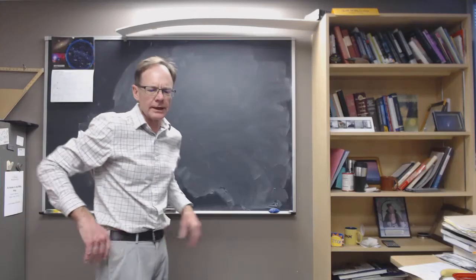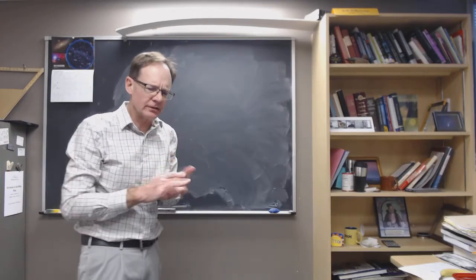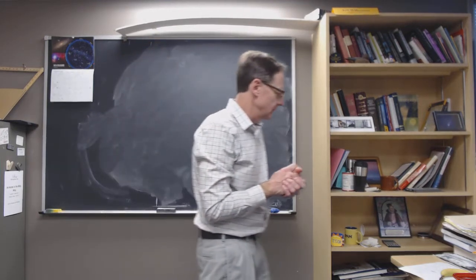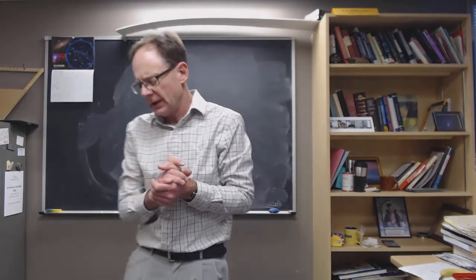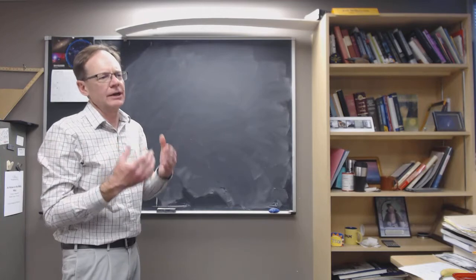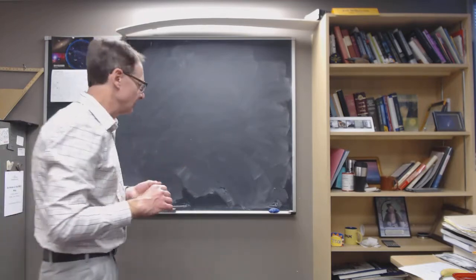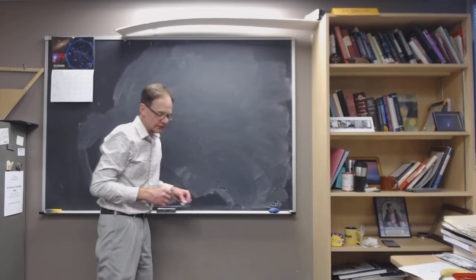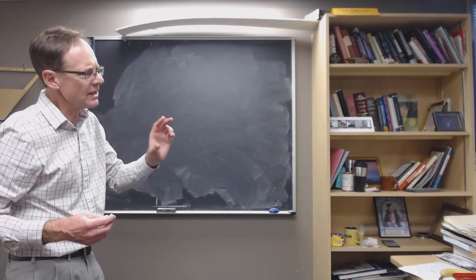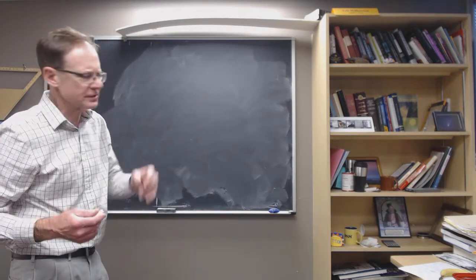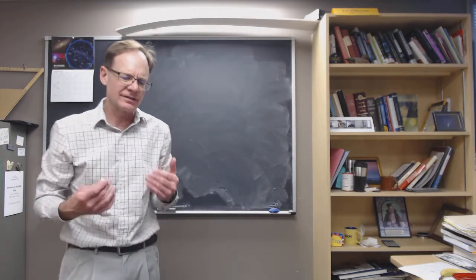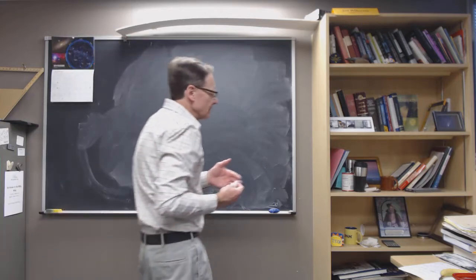Hello, I hope everybody's doing well. This is the introduction to our third and final project of the term. What we're doing is looking at color excess and reddening that we looked at in the open star clusters lab a couple of weeks ago, and we're trying to understand the distribution of dust and gas in the galaxy that's causing that reddening.